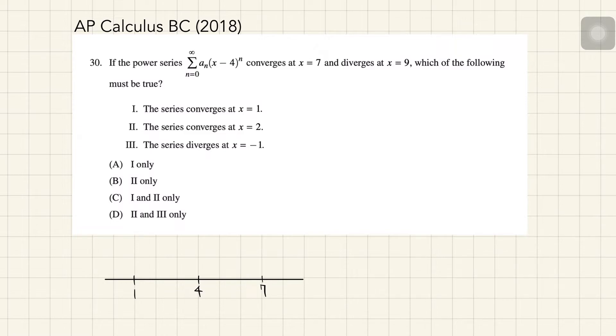So we can eliminate statement 1. Number 2, the series converges at x equals 2. Because the radius of convergence is at least 3, and x equals 2 is included in the interval of convergence, statement 2 is correct.